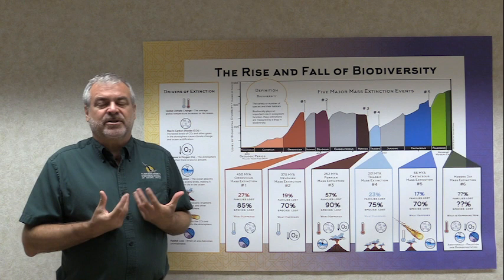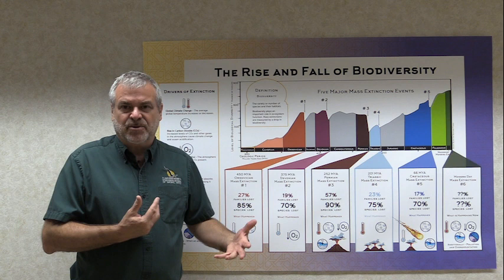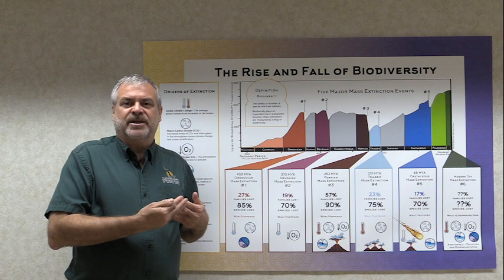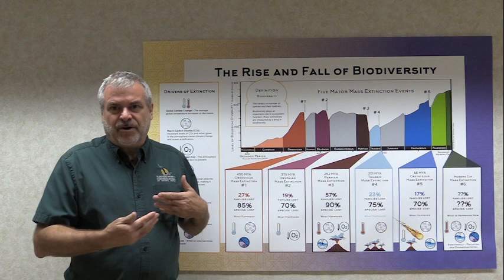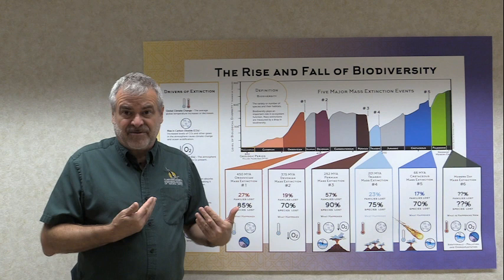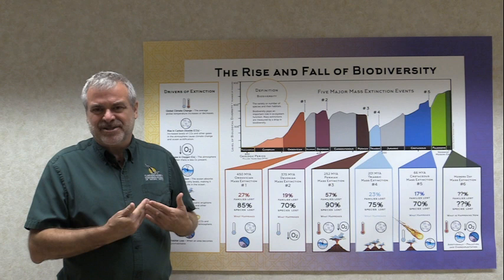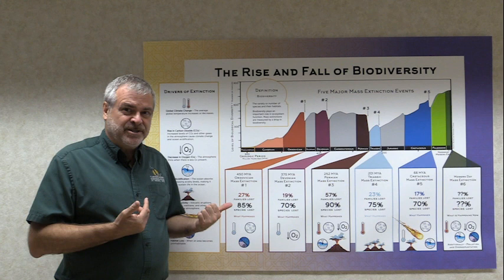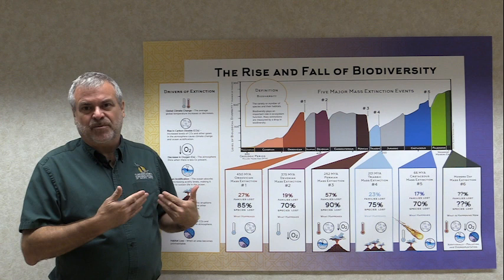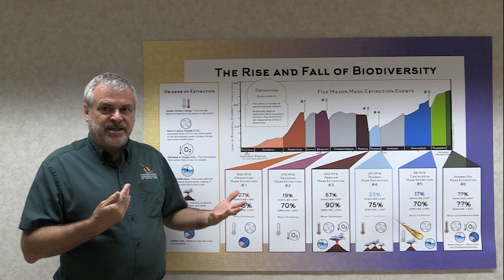Interestingly, these five major mass extinction events correlate with boundaries between different time periods. We talk about the history of life in terms of the Paleozoic — ancient life — the Mesozoic — middle life — and the Cenozoic — modern life. The changes between the Paleozoic and Mesozoic, and between the Mesozoic and Cenozoic, are the two biggest mass extinction events in the history of life. There are also three other major mass extinction events: one at the end of the Ordovician, one at the end of the Devonian, and one at the end of the Triassic. A lot of the changes in the history of life are due to mass extinctions — that's really how we built our geologic time scale.